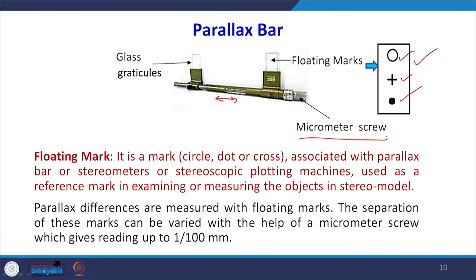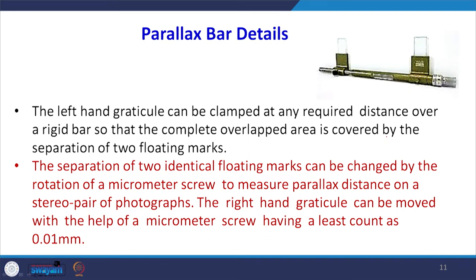We read both the main scale and micrometer drum values. When creating a stereo model and selecting a particular object to take parallax bar readings, we fix the arm with a screw. You can loosen the screw to change the distance between the two plates. In the entire overlap region, you must ensure that the floating marks remain within the overlap region — you can open it fully as per convenience to cover the whole area.